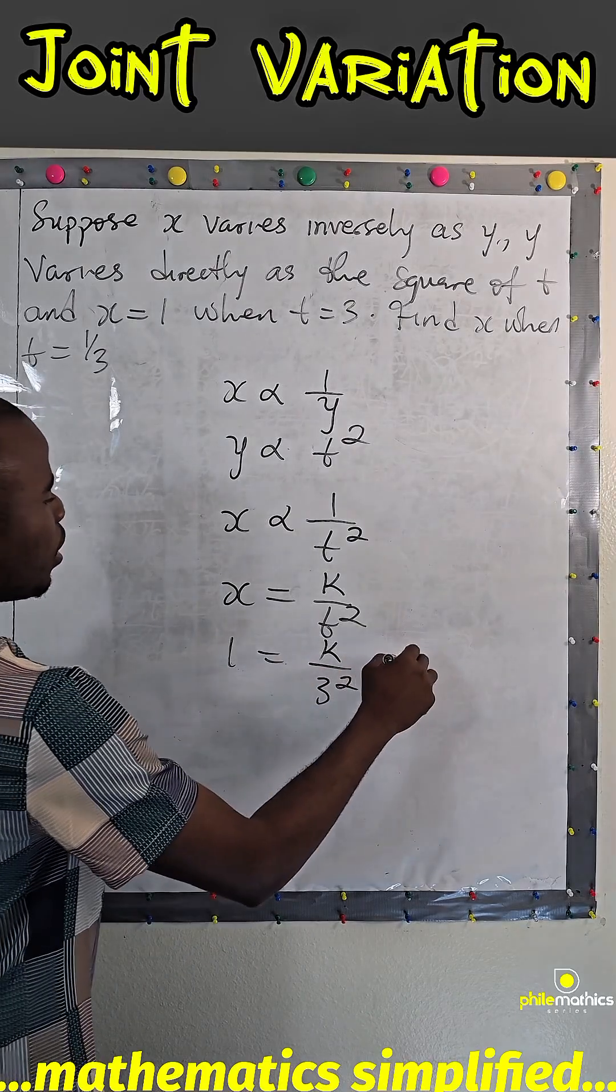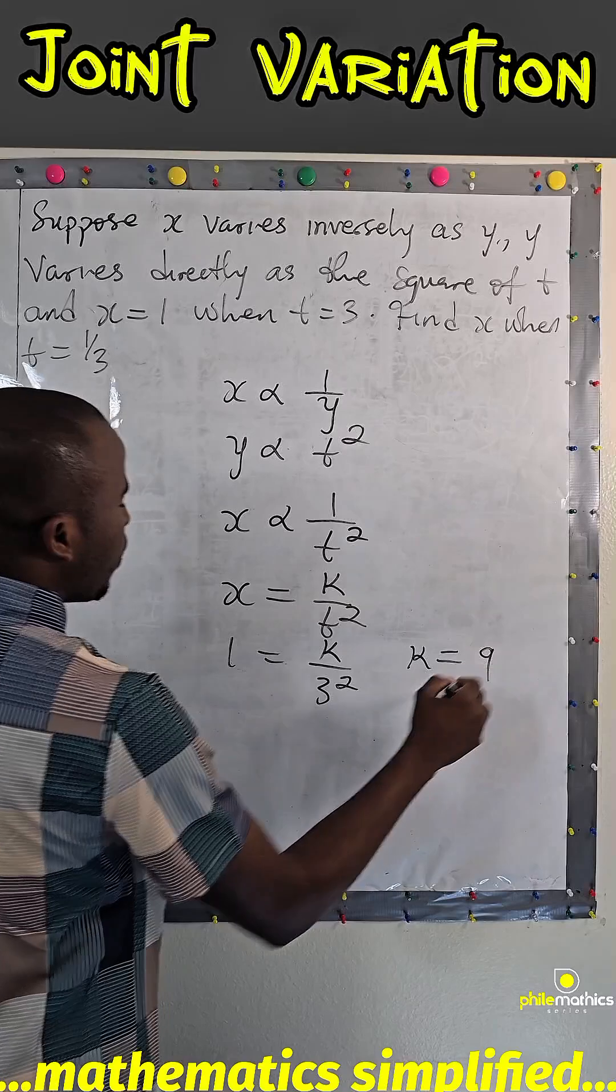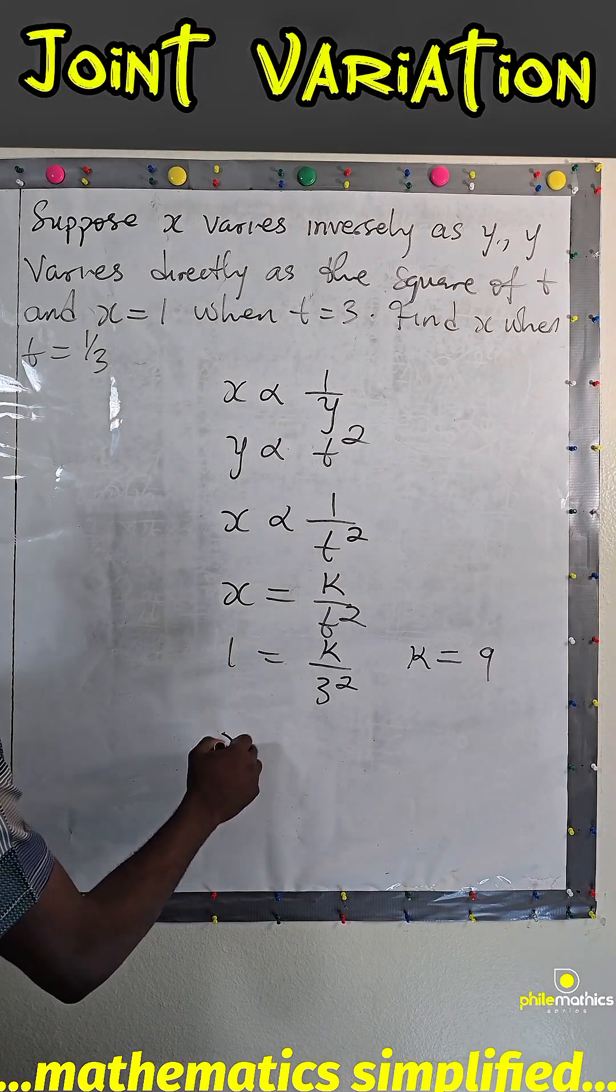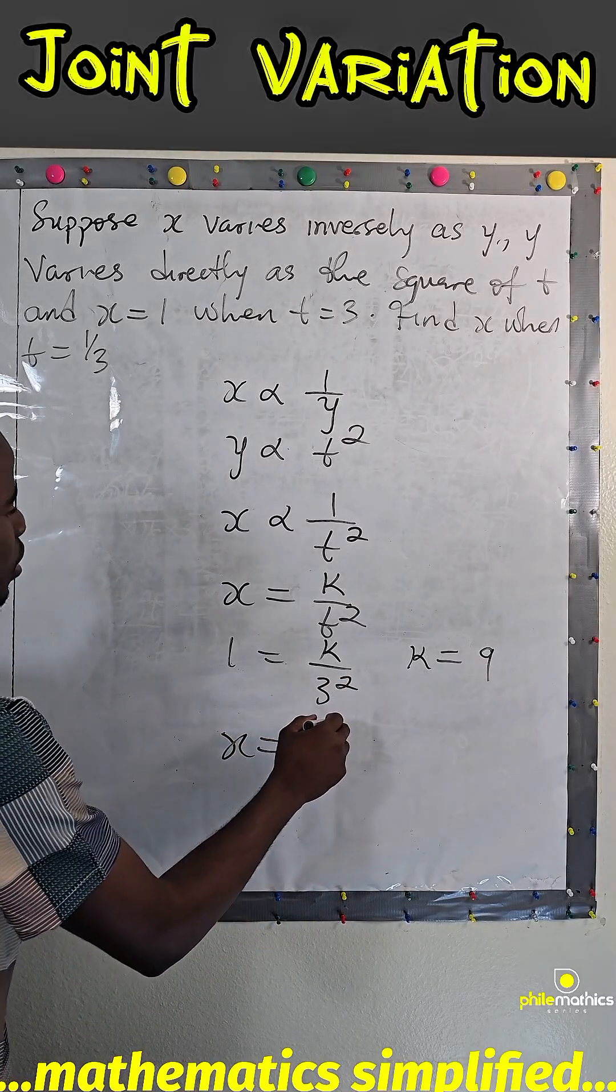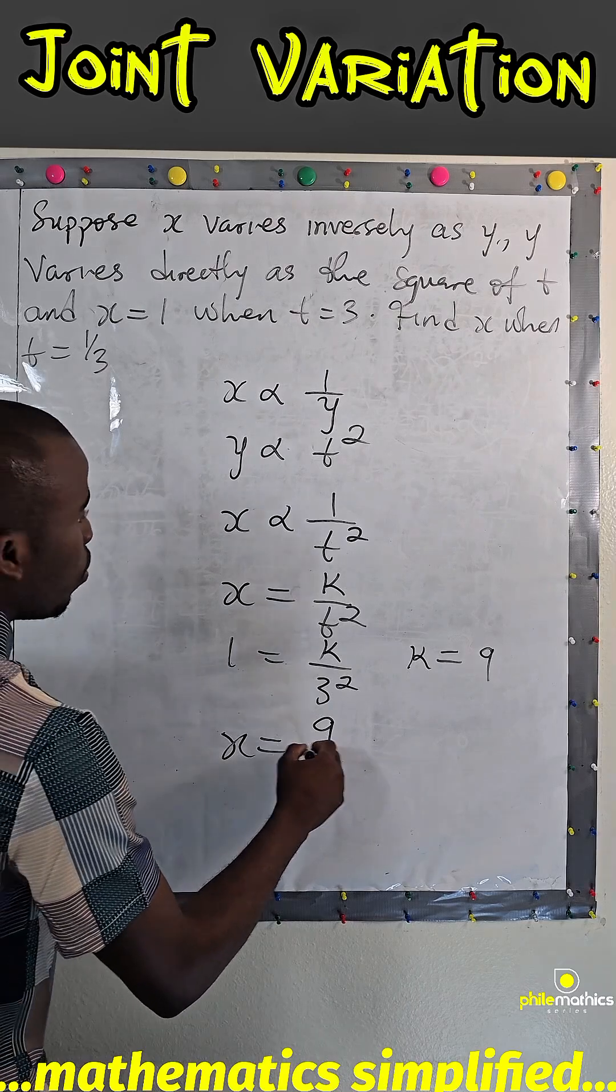Now we are asked to find x. K is 9 over, and we are told that t is 1 over 3. Remember t is squared.